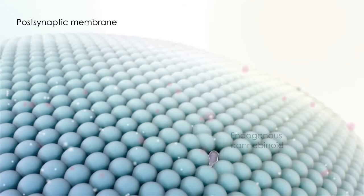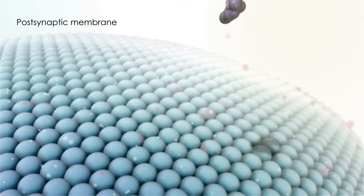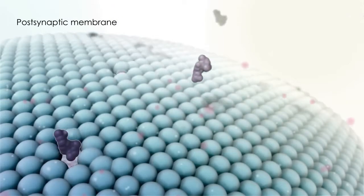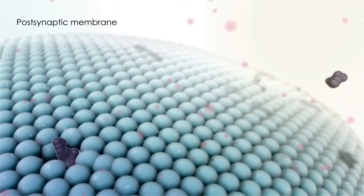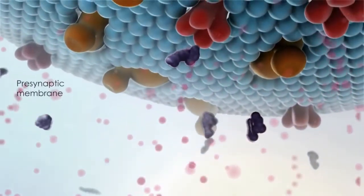Endogenous cannabinoids are synthesized on demand from the phospholipid bilayer of the post-synaptic membrane. These lipophilic ligands are released directly into the synaptic cleft and act in retrograde fashion on the pre-synaptic neuron where the cannabinoid receptors are expressed.